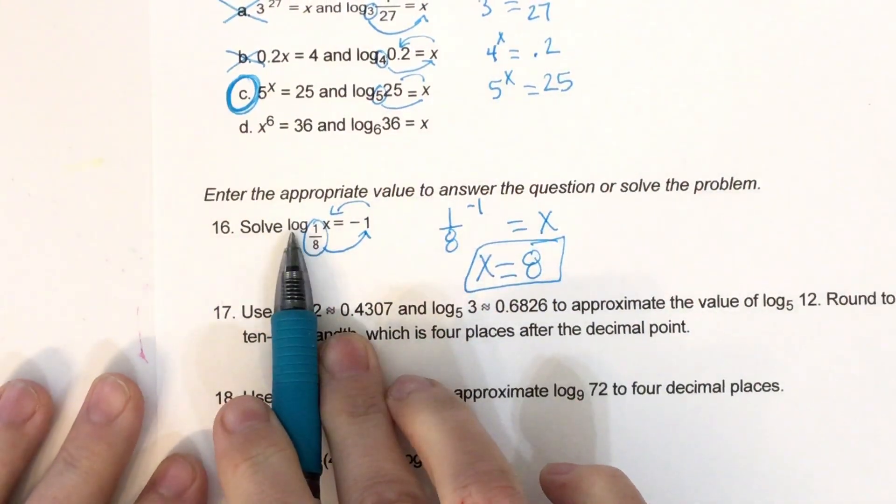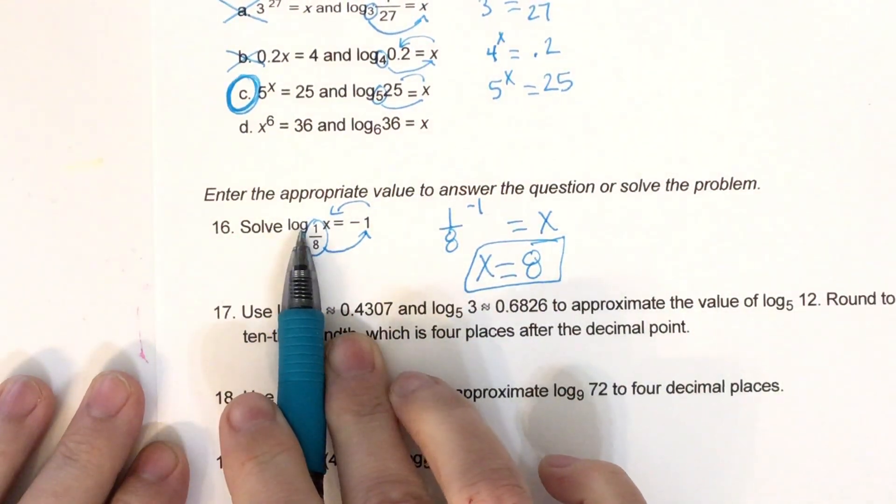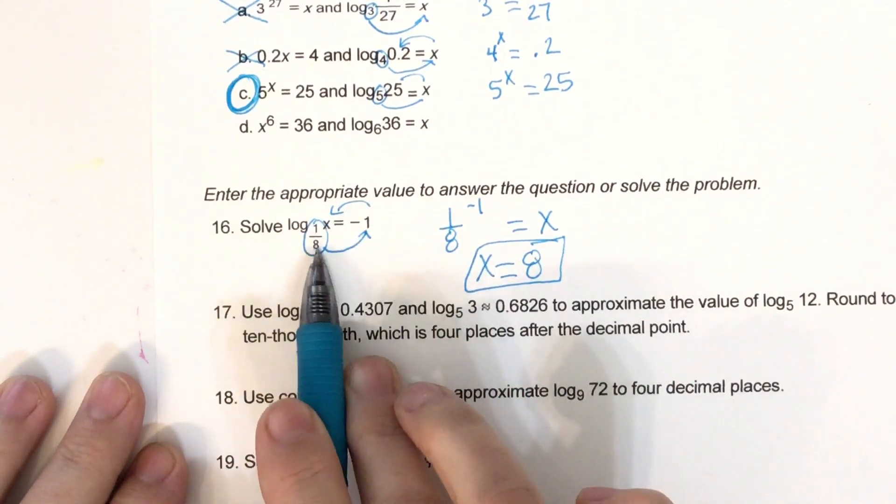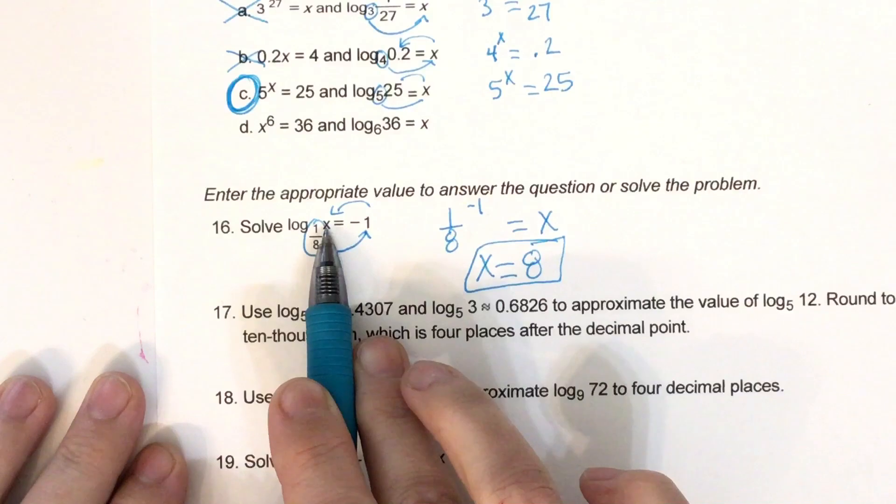So if you see log one time or natural log one time, then write it in exponential form. Go around the world. Base to the power equals the number.